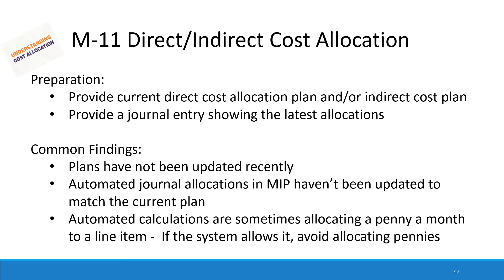We're going to move on to your direct and indirect cost allocation. We just need to see a copy of your direct cost allocation plan and/or any indirect cost allocation plan, and we'd also like to see a journal entry showing the latest allocations. What we find is that plans have not been updated recently — they should be updated annually. Automatic journal allocations, specifically in the MIP software, haven't been updated to match the current plan. Additionally, sometimes these automatic calculations are allocating a penny a month to a line item, and we request that if your system allows it, avoid allocating pennies.